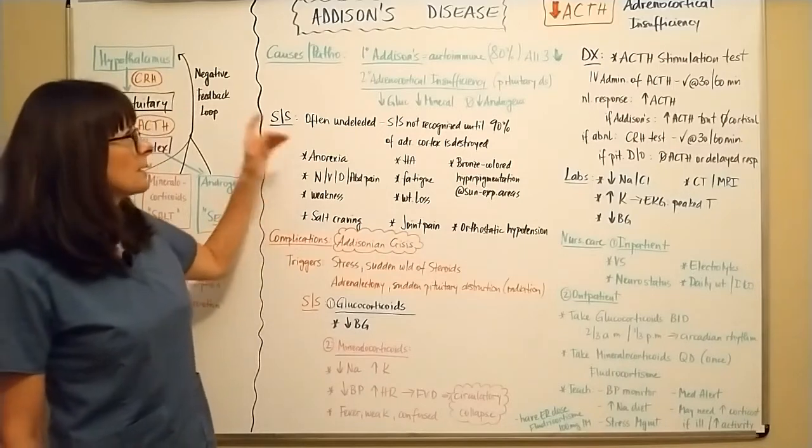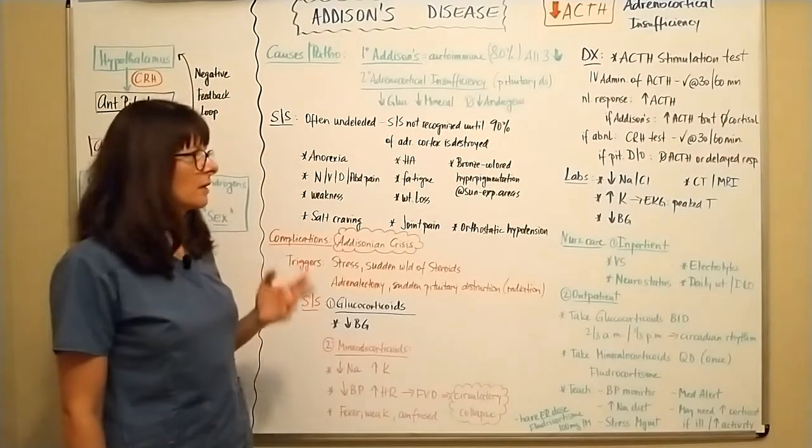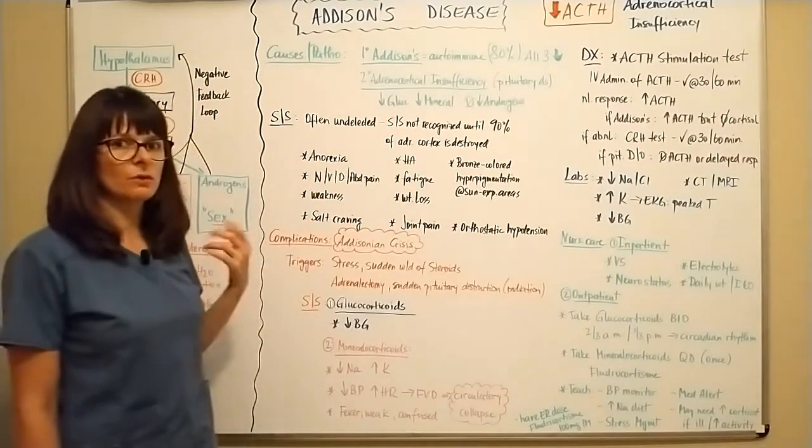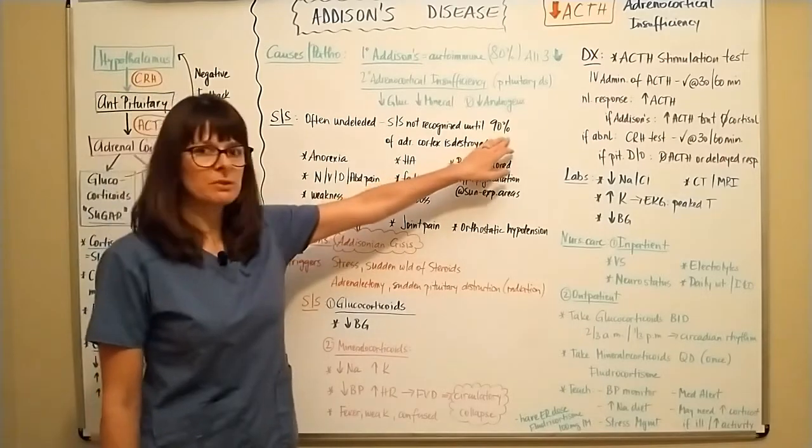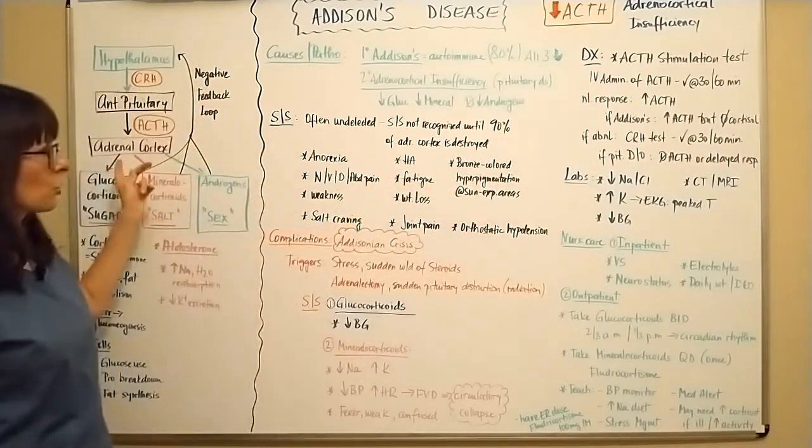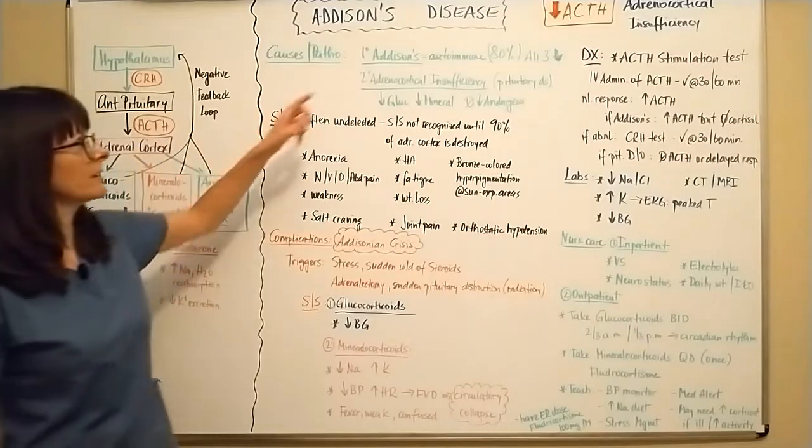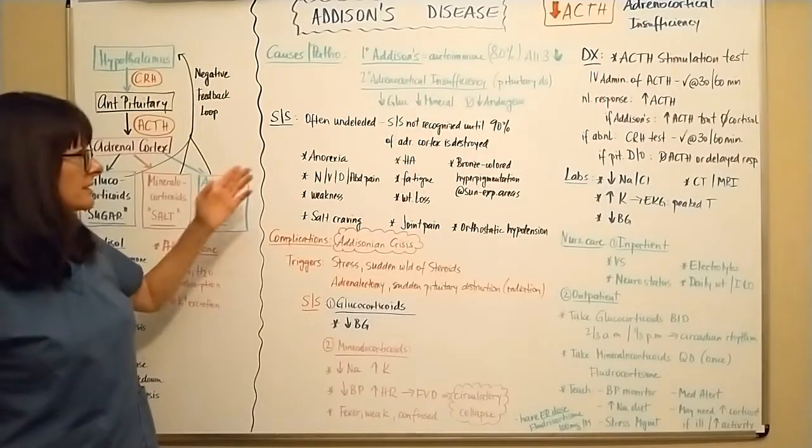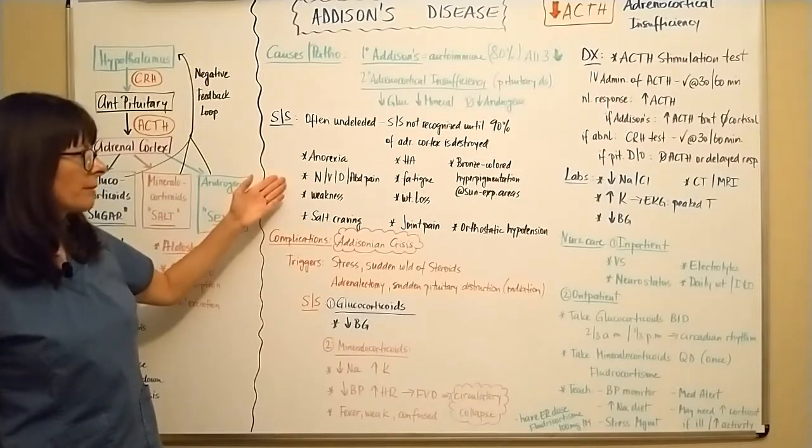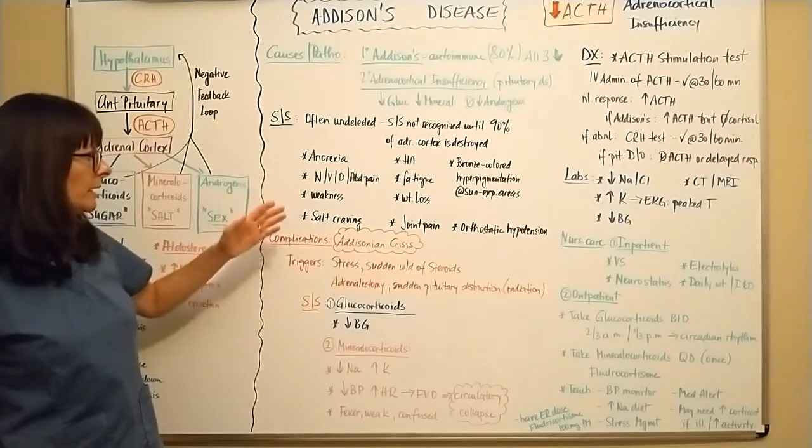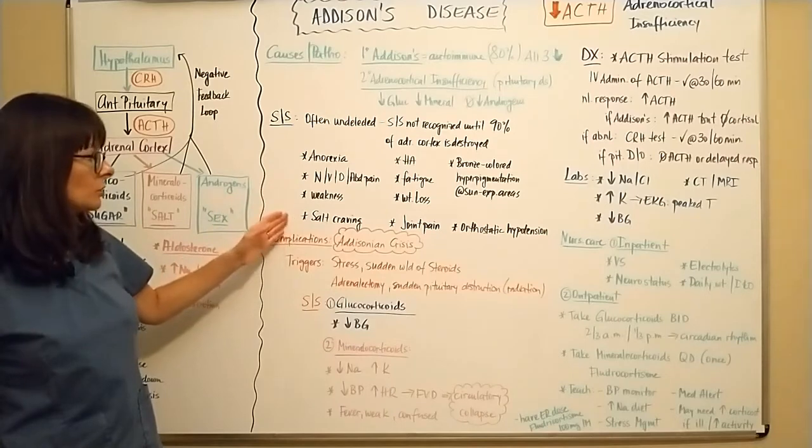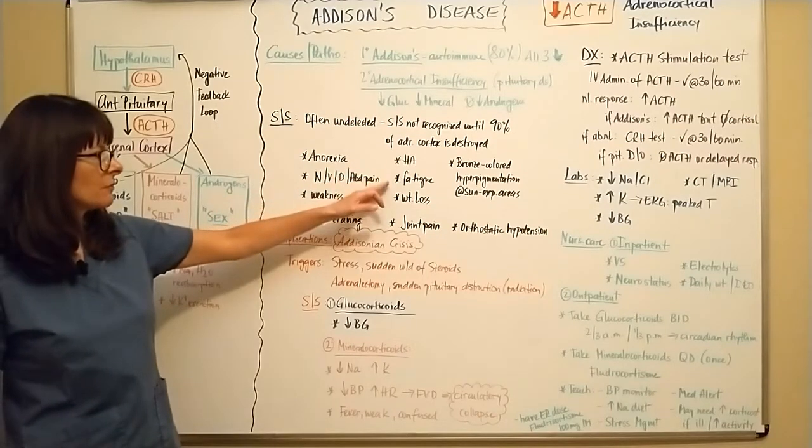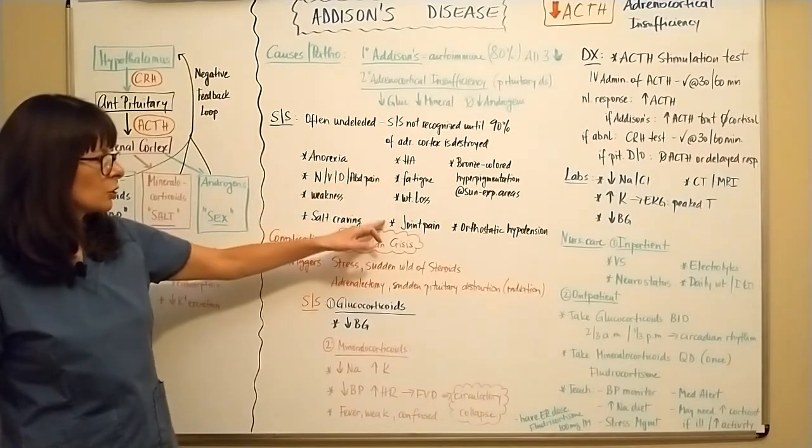Unfortunately, signs and symptoms of Addison's disease are often not recognized or visible until about 90% of the adrenal cortex is destroyed by this autoimmune disease that's causing it. And they can be very vague, such as anorexia, nausea, vomiting, diarrhea, abdominal pain, weakness, salt craving, headache, fatigue, weight loss, joint pain.